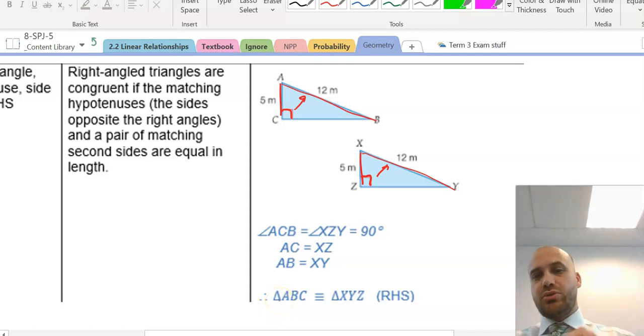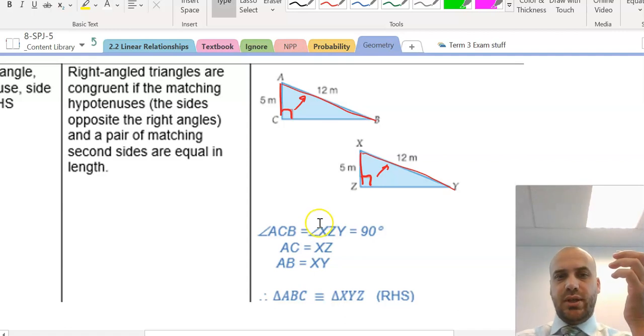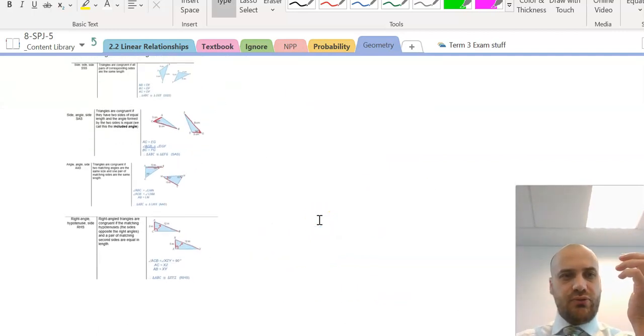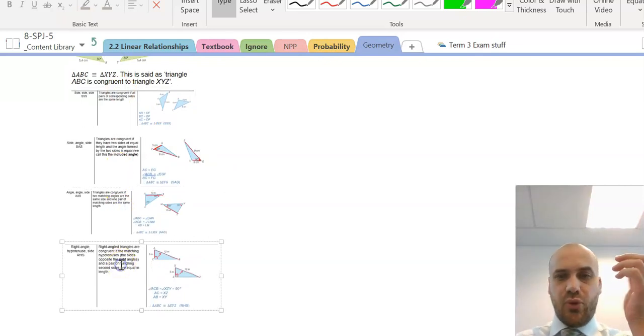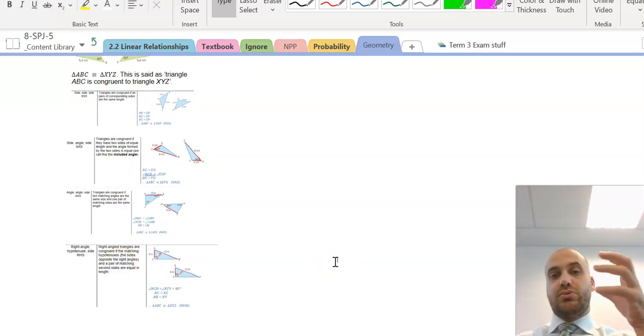Triangle ABC is congruent to triangle XYZ because of the RHS rule. That leaves us with 4, 1, 2, 3, 4 congruence rules.